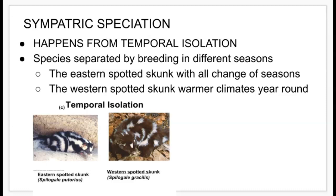The best example of sympatric speciation is the skunk. You have the eastern spotted skunk, which experiences all changes of seasons, and the western spotted skunk, which lives in warmer climates year-round. These two species have different breeding times based on the season of the year — a result of temporal isolation.